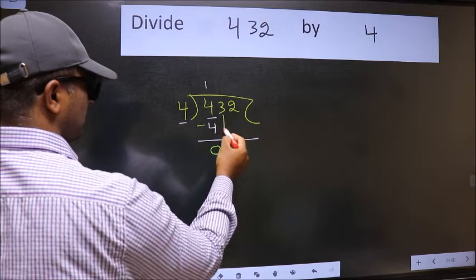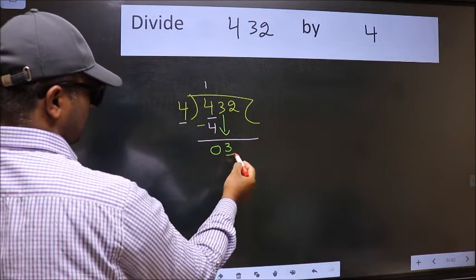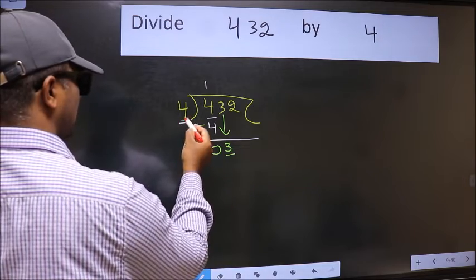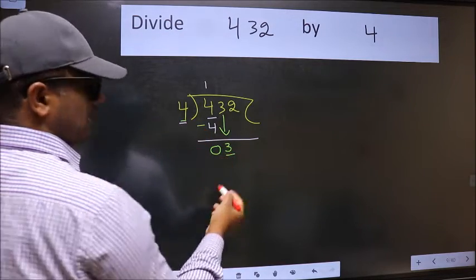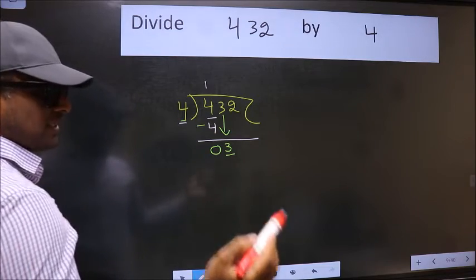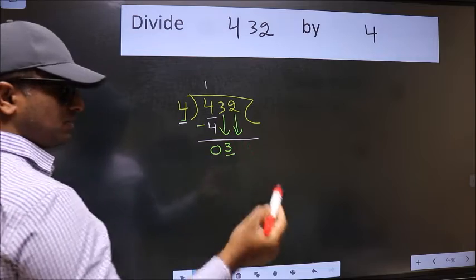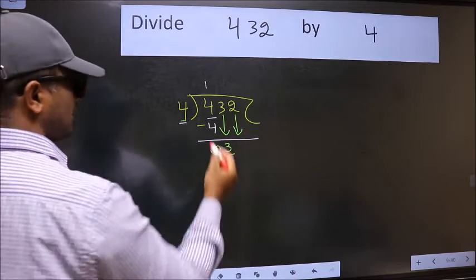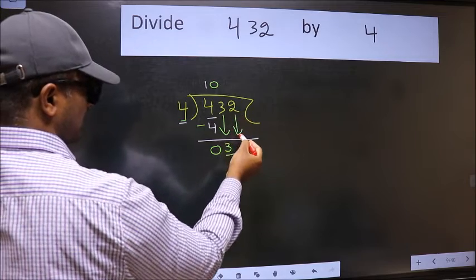After this, bring down the beside number. So 3 down. Now here we have 3 and here 4. 3 is smaller than 4, so we should bring down the second number. And the rule to bring down the second number is, we should put 0 here. Then only we can bring this number down.